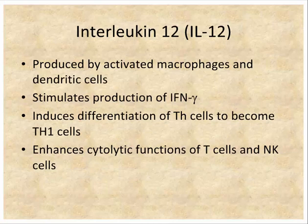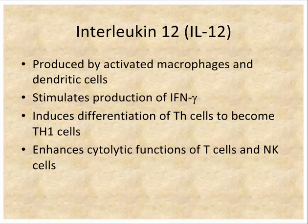IL-12 is produced by macrophages and dendritic cells — the antigen-presenting cells. Whether it's produced is influenced by what antigen is encountered, which is how the response is driven toward TH1 or TH2. IL-12 leads to the production of interferon gamma because it drives differentiation of the helper cell toward a TH1 phenotype. It also enhances the cytolytic functions of T cells and NK cells.